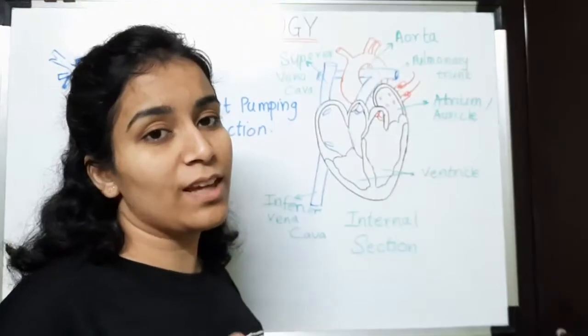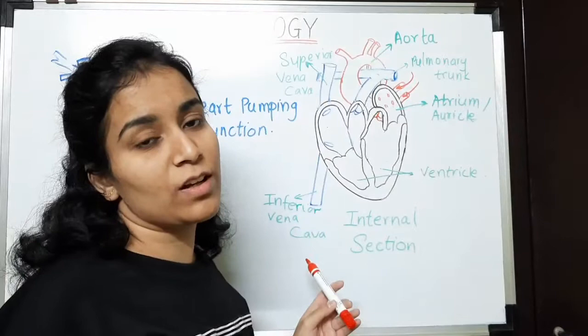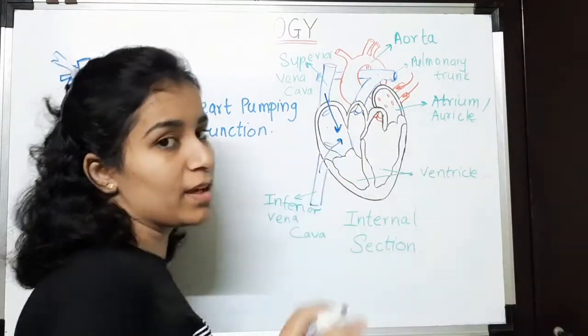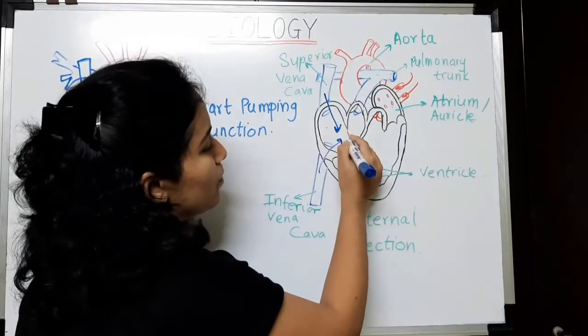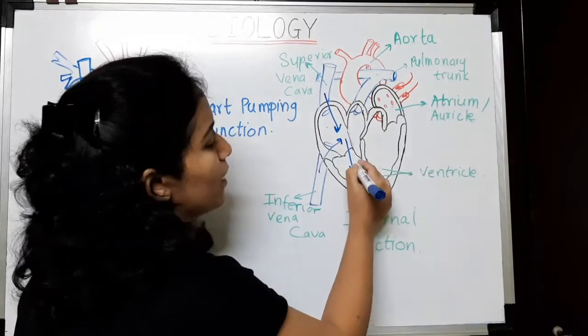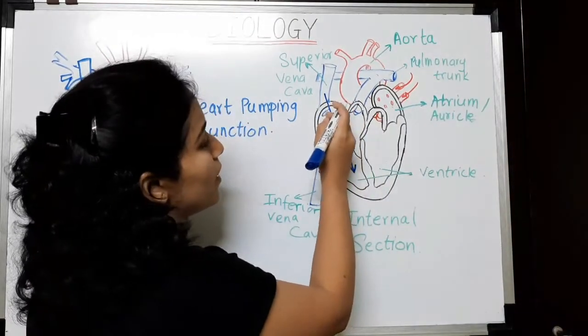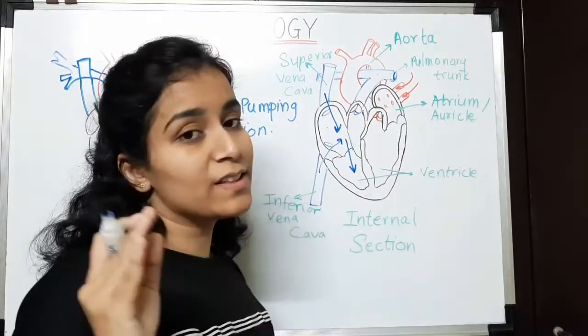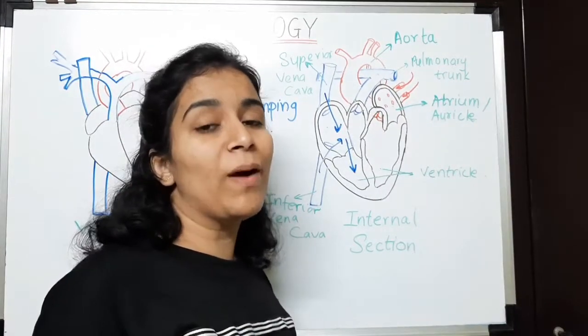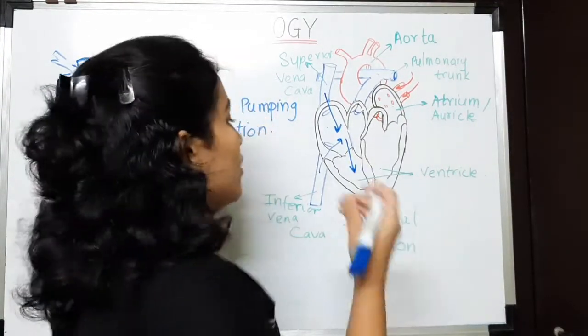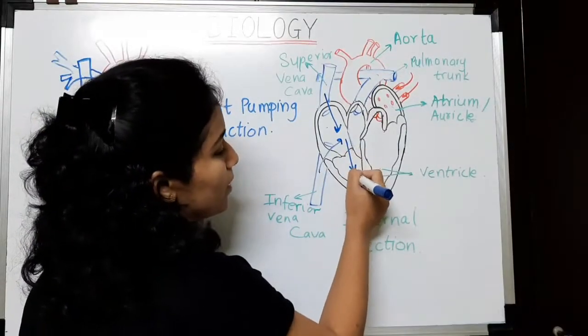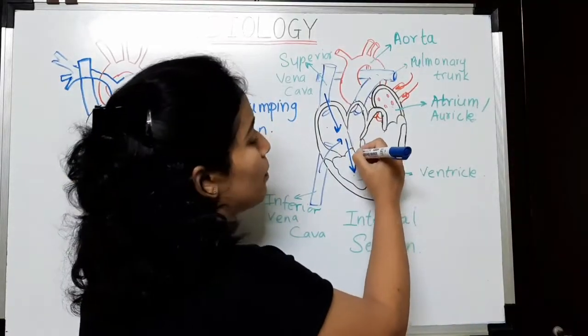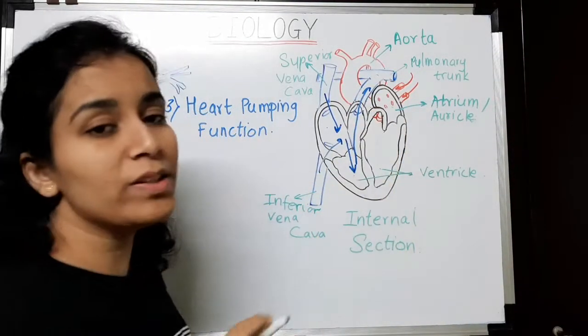So, from coronary sinus, superior vena cava and inferior vena cava, deoxygenated blood enters right atrium. Now, from right atrium blood enters into right ventricle and the right atrium and right ventricle is guarded by tricuspid valve. This valve prevents the backward flow of blood. So, from here, from right ventricle, the blood is pumped into pulmonary trunk.